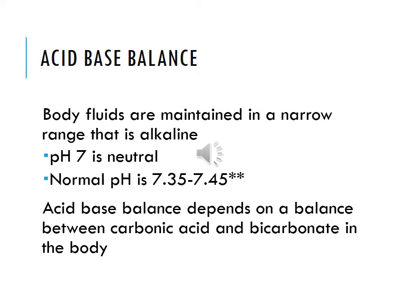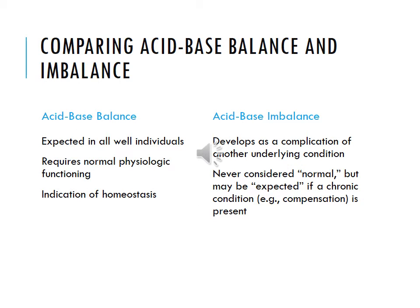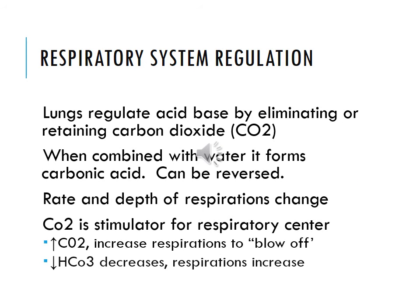Body fluids are maintained in a narrow, slightly alkaline range. pH 7 is neutral; normal is 7.35 to 7.45. Acid-base balance depends on a balance between carbonic acid and bicarbonate. Acid-base balance is expected in all well individuals, requires normal physiological functioning, and indicates homeostasis. An imbalance is a complication of an underlying condition — it's never considered normal, but it could be expected in a chronic condition where compensation is present.